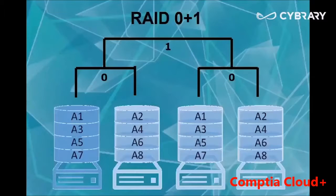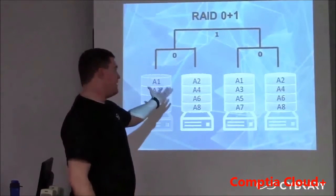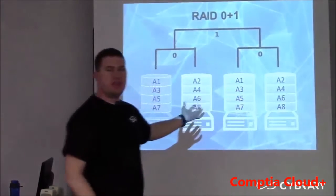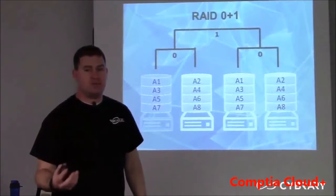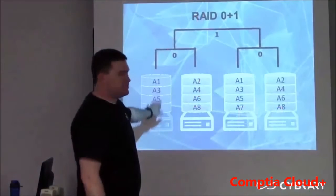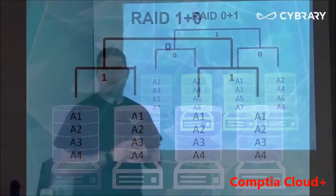RAID 0 plus 1 is where you have first RAID 0, which is striping, and then you have RAID 1 at the higher tier, which is mirroring. So you will have two hard drives striping information and then those two hard drives will be mirrored to the other side. This allows you reliability but performance at the same time. If one hard drive fails, you have the second hard drive and you are able to use it. You just replace the failed drive and all the information is replicated back, and you are able to perform as if nothing happened.